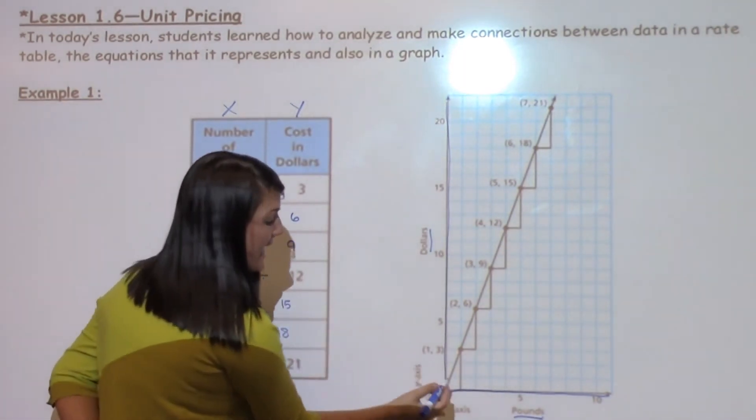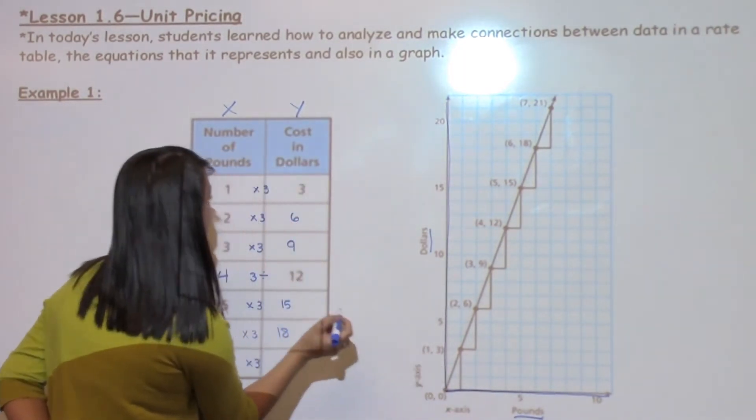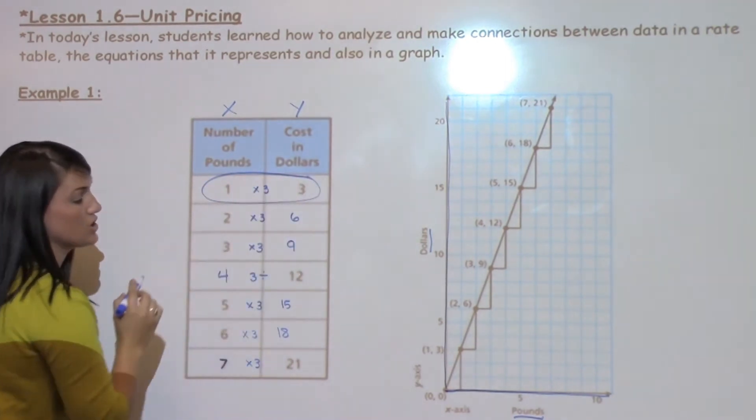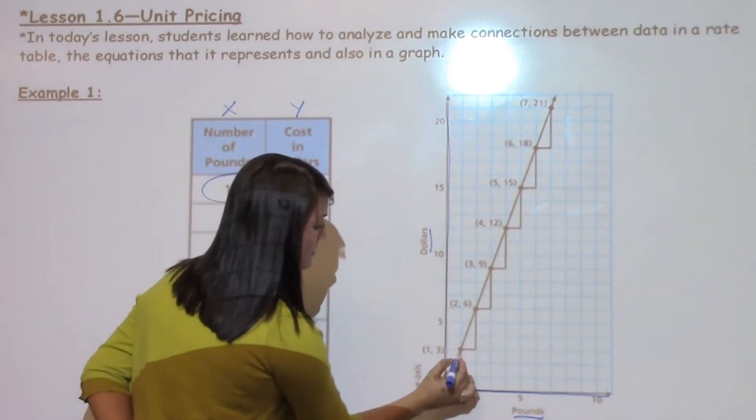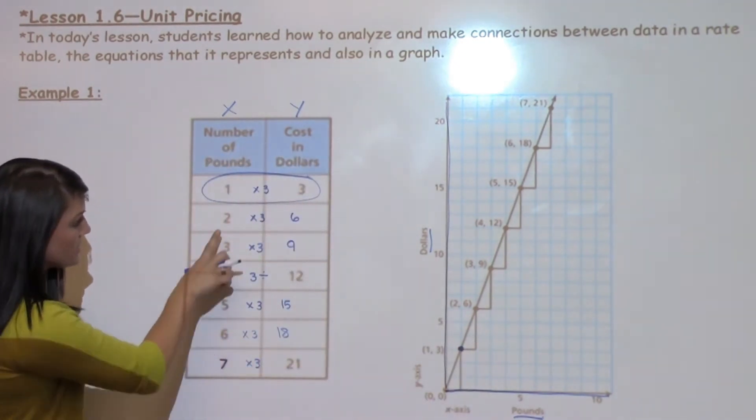So I see that I have a point labeled at 1, 3, which is representing this section of the chart, or of the rate table, 1, 3.